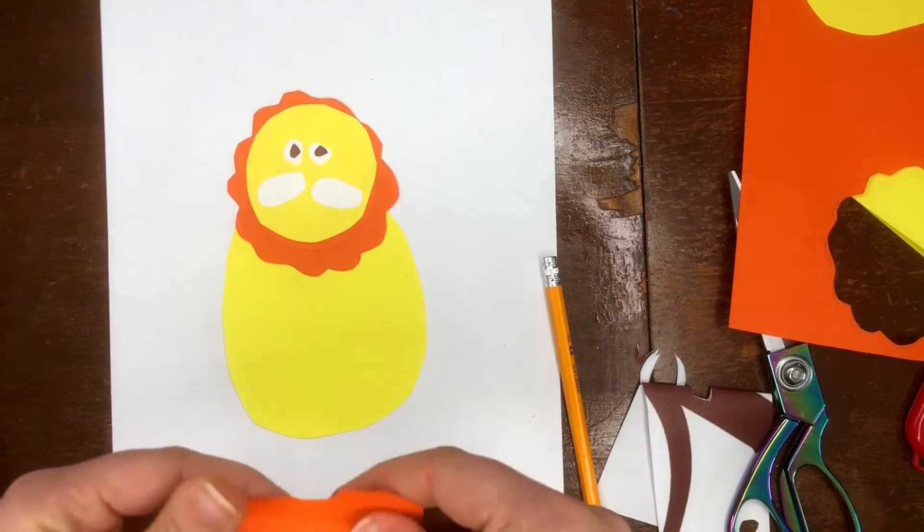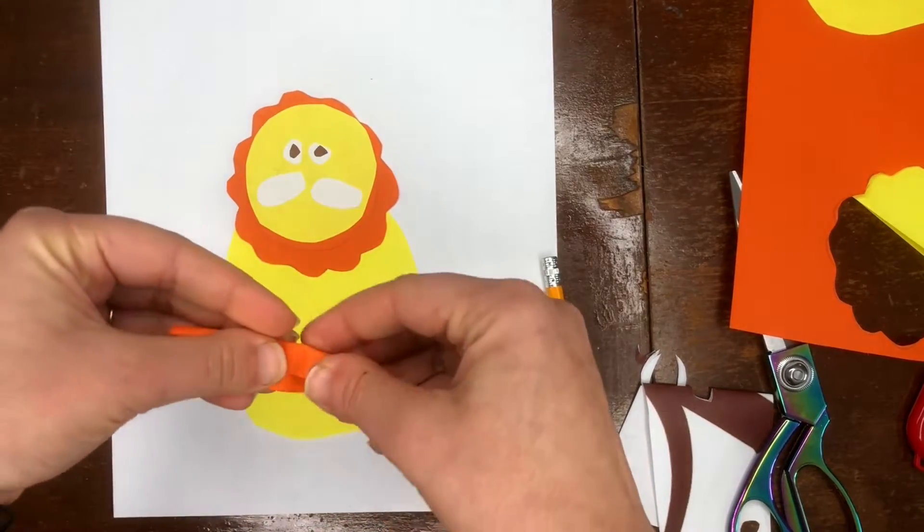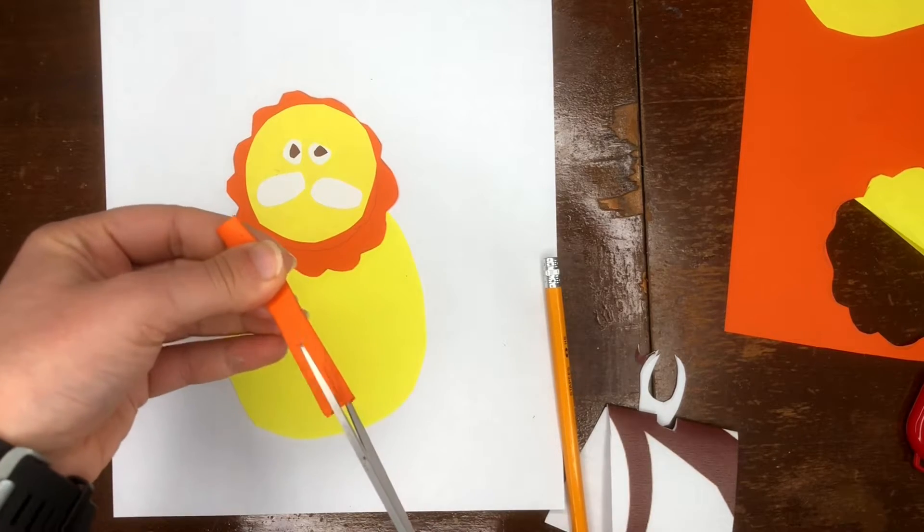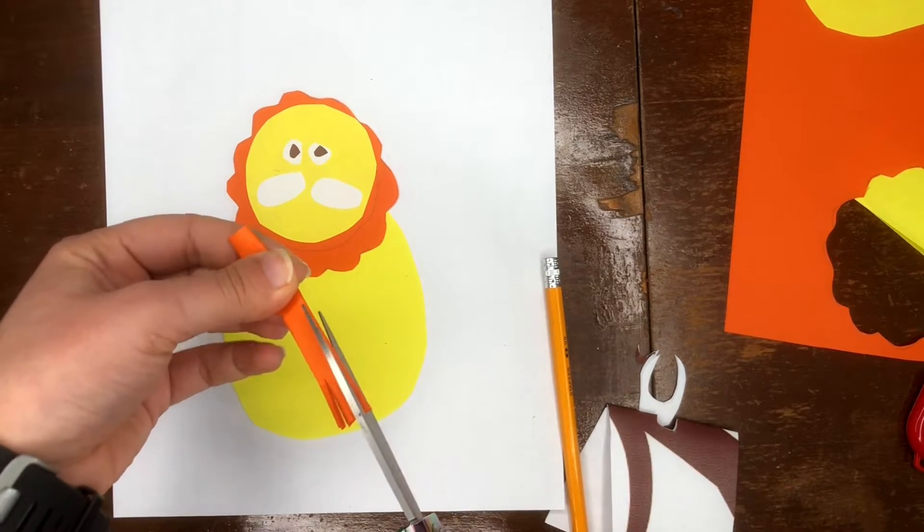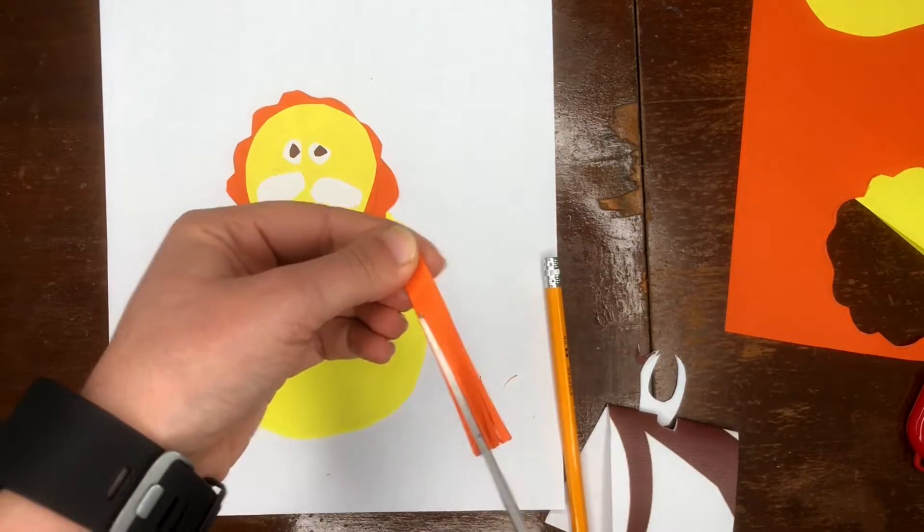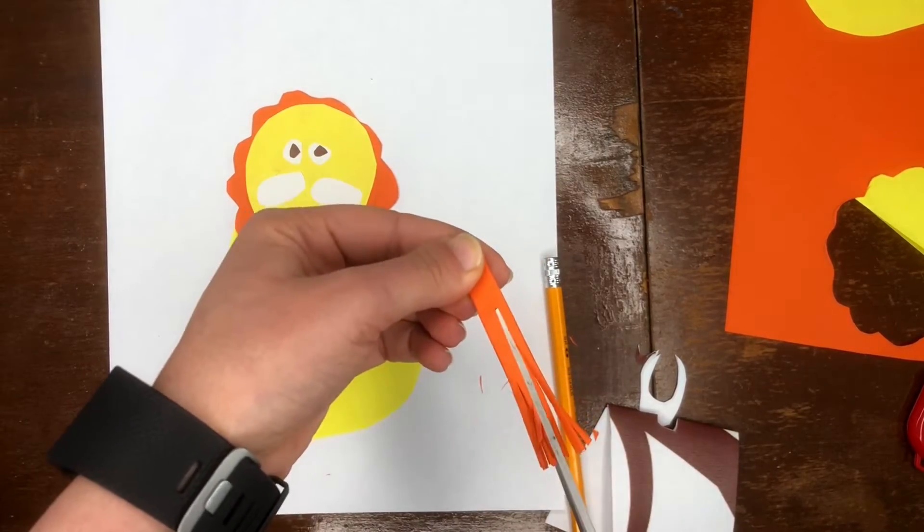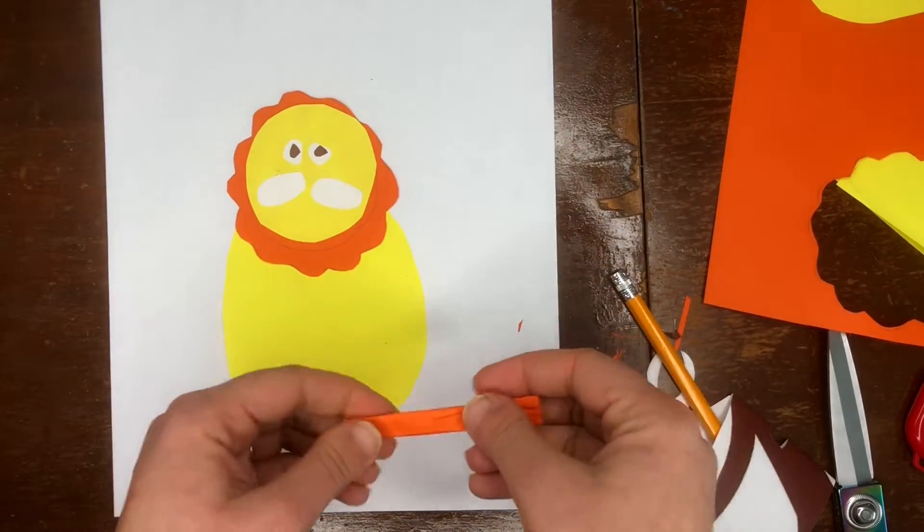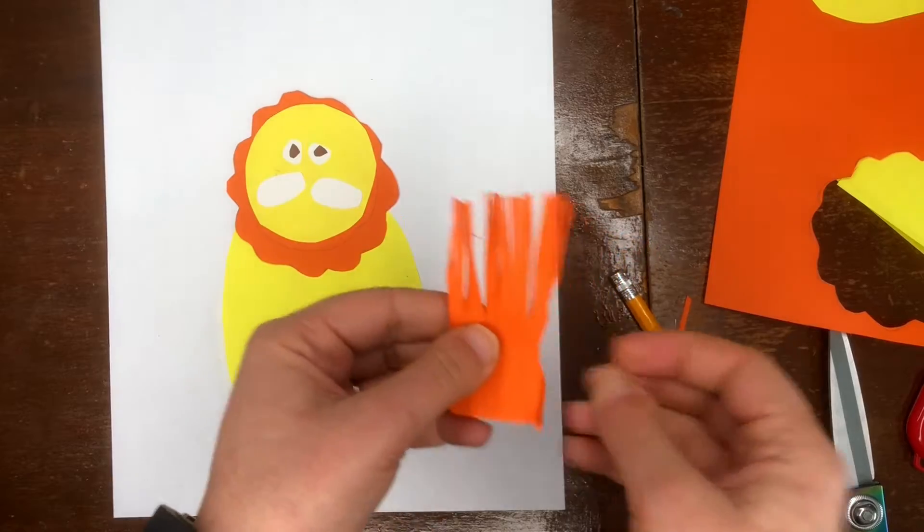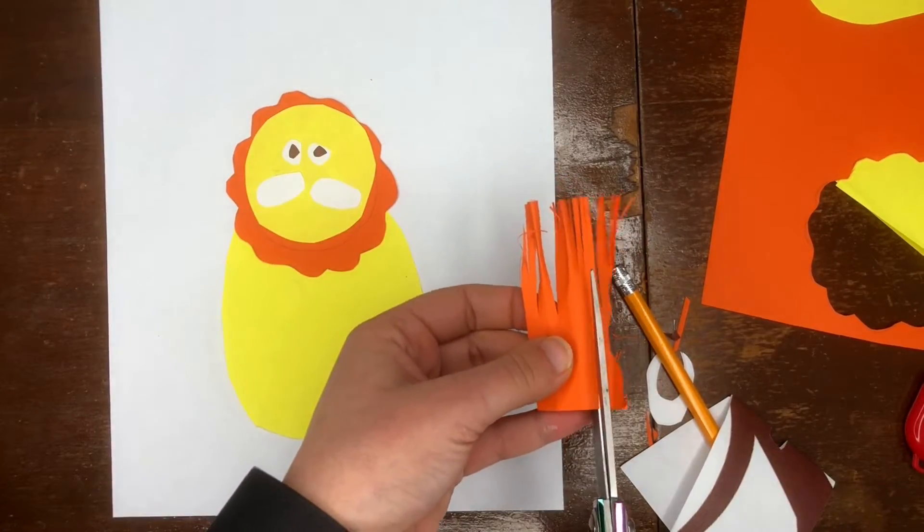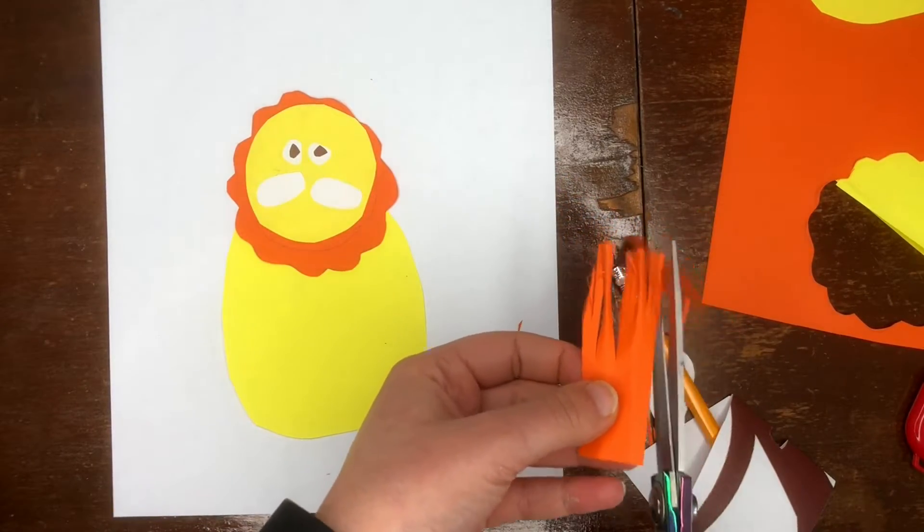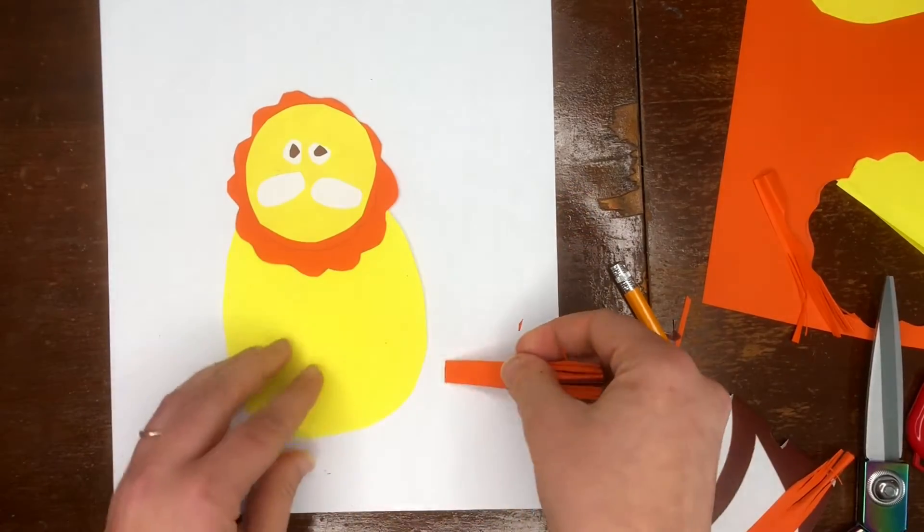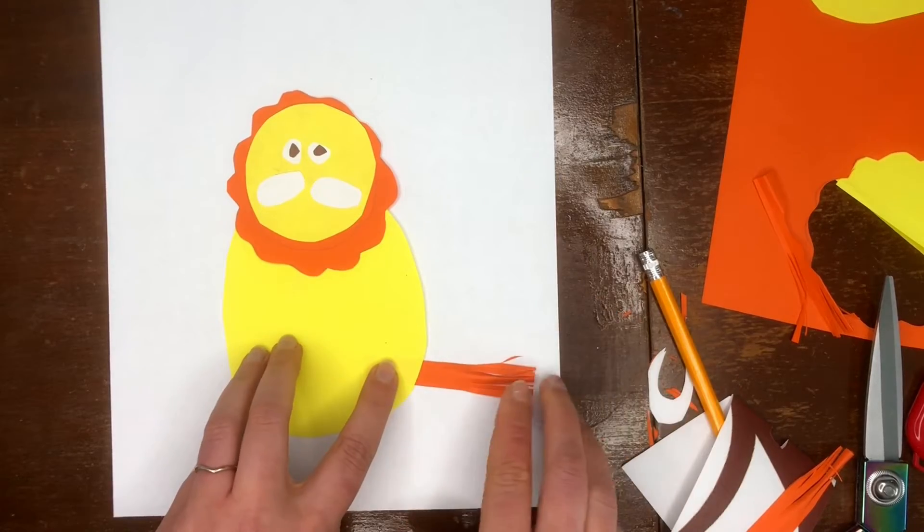And then, you want a little bit for the tail. I'm just folding up a scrap piece of orange. And I'm making some cuts into it. And then, shape away those little fly aways. And I can unfold it and pick that best section. And there we go. And there is our tail.